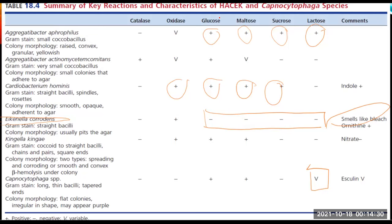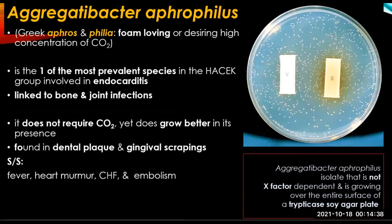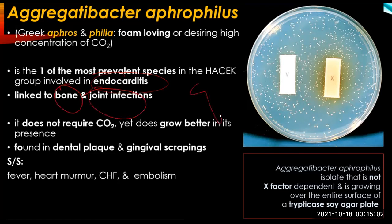Aggregatibacter aphrophilus — from the Greek 'aphrophilus' meaning foam-loving or desiring high concentration of CO2 — is one of the most prevalent species in the HACEK group involved in endocarditis disease and is linked to bone and joint infections. It does not need CO2 but grows better in its presence and is usually found in dental plaques and gingival scrapings. Signs and symptoms of infection include fever, congestive heart failure, embolism, and heart murmur.